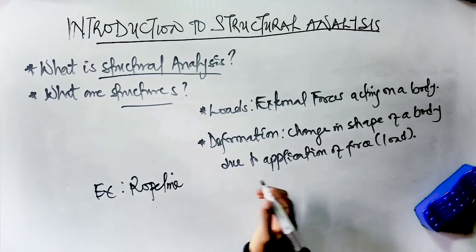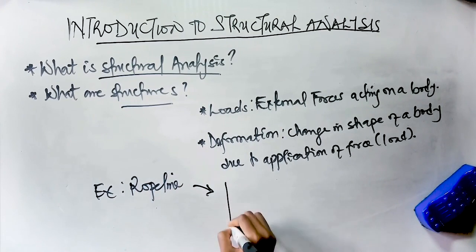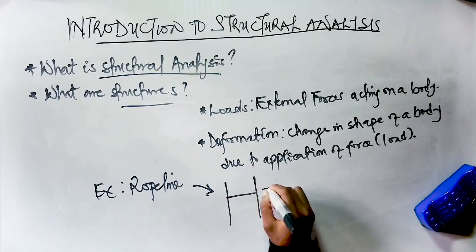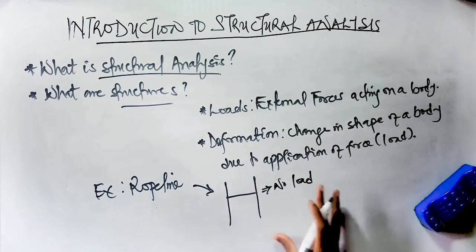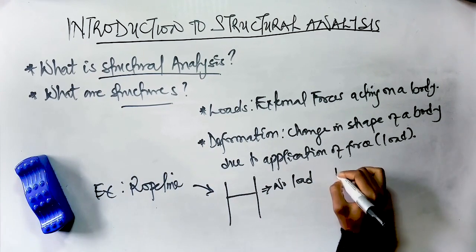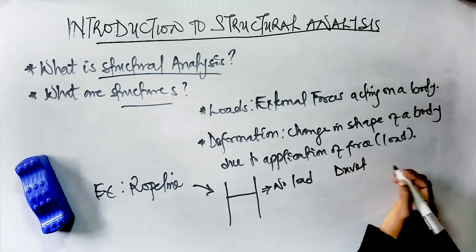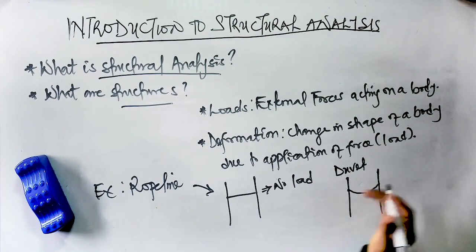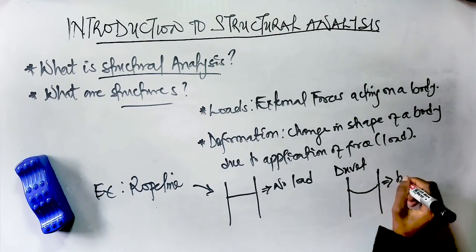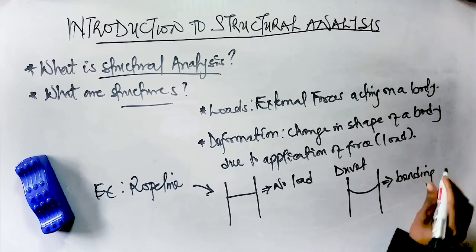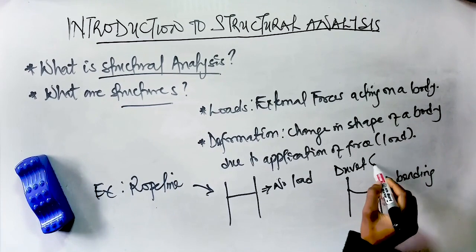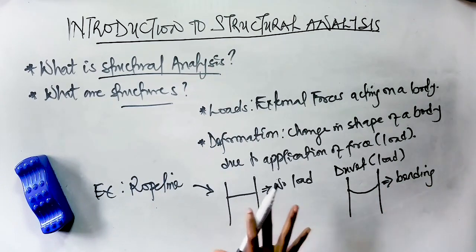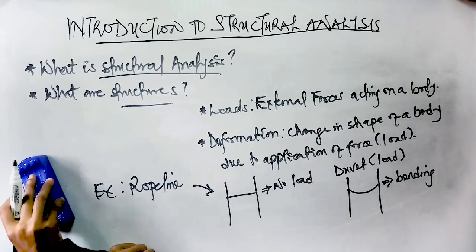A rope line, for example, is usually straight because there is no load applied to it. But when a load is applied — say a wet duvet is hung on the rope line — it tends to take another shape. We can say that deformation has occurred. This type of deformation is called bending. There are different types of deformation: it could be bending, twisting, shearing, and so on.